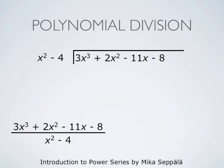We search for a monomial such that when we multiply the leading term of the denominator, that is x², by that monomial, we get the leading term of the numerator, which is 3x³. If we multiply x² by 3x, we get 3x³. We write the product of 3x and x² − 4 below the numerator. Then we subtract the product 3x³ − 12x from the numerator by changing its signs and adding up.